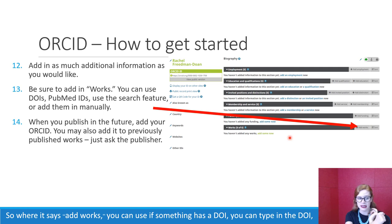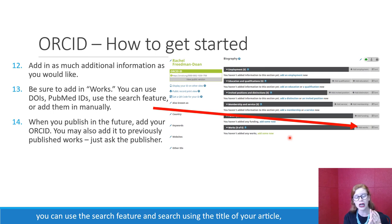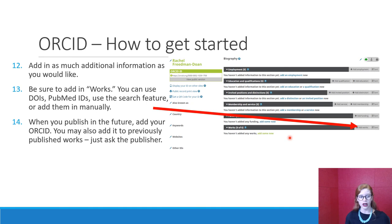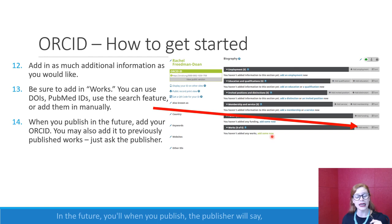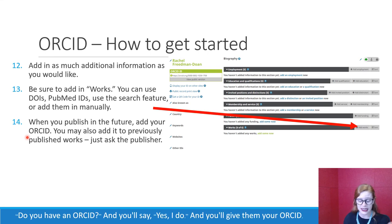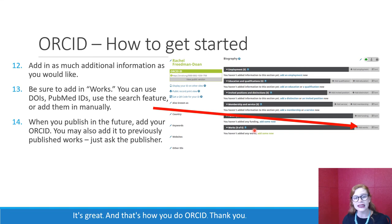Where it says 'Add works,' if something has a DOI you can type in the DOI; you can use a PubMed ID if you publish with PubMed; you can use the search feature and search using the title of your article; or as a last resort, type in the information manually. In the future, when you publish, the publisher will ask if you have an ORCID ID. You'll say yes, give them your ORCID ID, and your new works will automatically appear on your profile. It'll be easy — and that's how you do ORCID. Thank you.